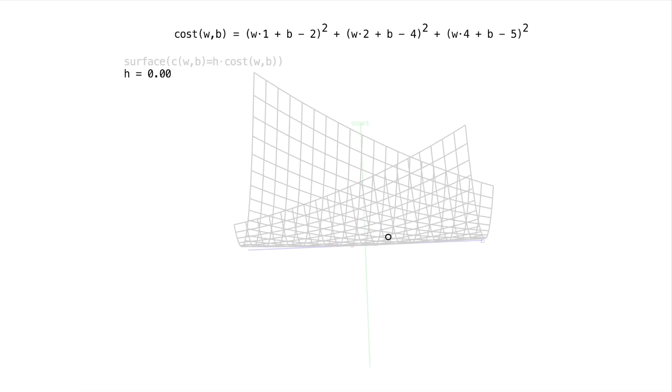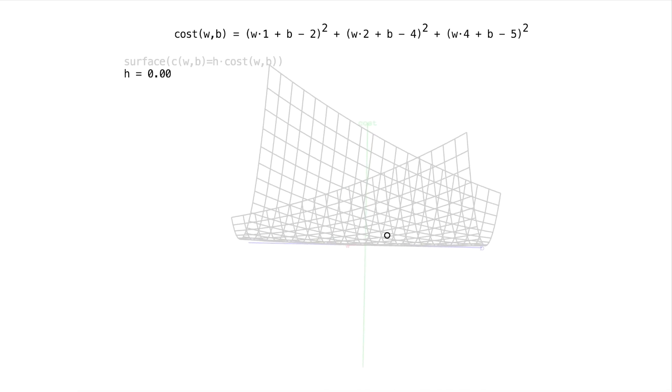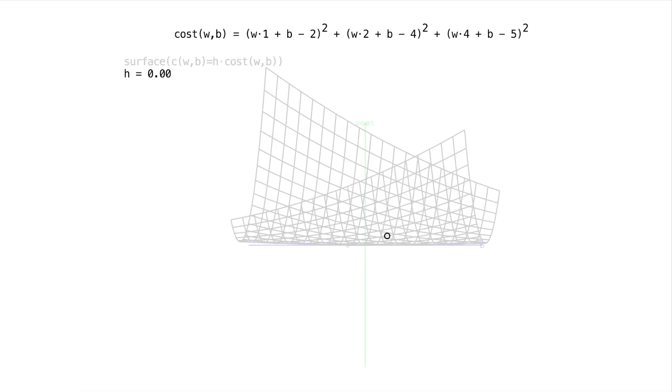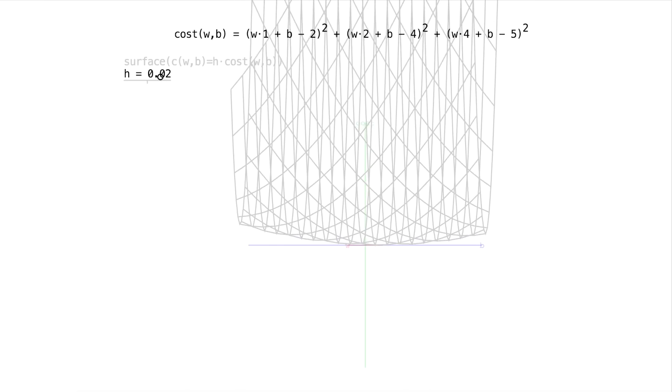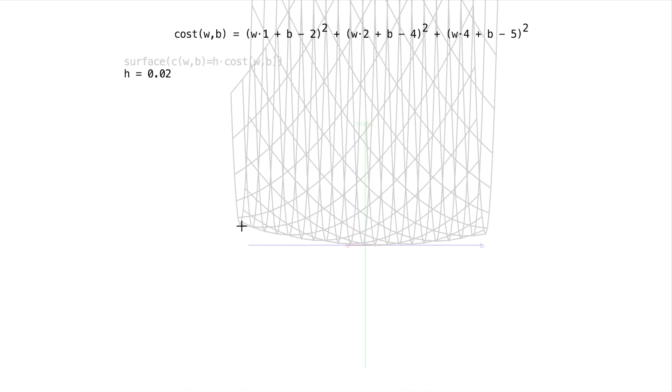Now it may not look like it here, but you can barely see that as you change b, the cost does have a minimum point over here. And I can increase the scaling to make that more clear. So if I bring up the scaling of the cost a lot, you can see that as we increase b, we're going to get less and less cost until we're right at this minimum point. And then if we keep pushing b while keeping w the same, the cost starts to increase.